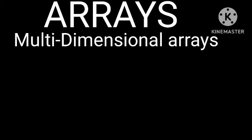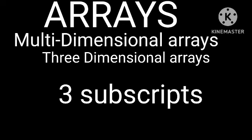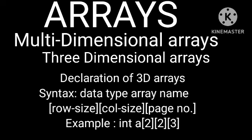For 3D arrays: an array name followed by three subscripts is called a three-dimensional array. The declaration syntax is: data_type array_name[row_size][column_size][base_number]. For example: int a[2][2][3].